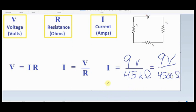And so when I do the division and I take 9 and divide by 4,500 it should come out to 0.002 amps. And if I do my conversions correctly that's really the same as saying 2 milliamps.